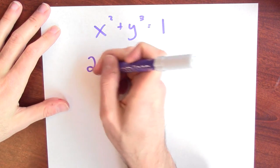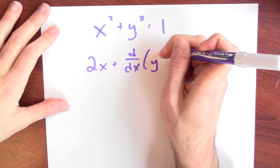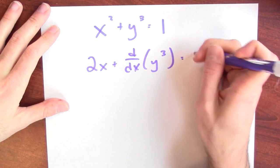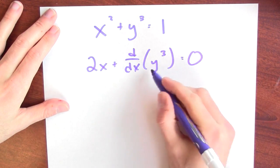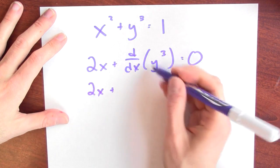the derivative of the left-hand side is 2x plus the derivative of y cubed equals the derivative of 1, which is 0. But what's the derivative of y cubed? If y is a function of x, then when you differentiate this,